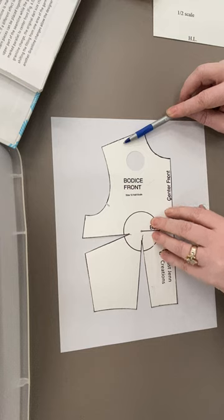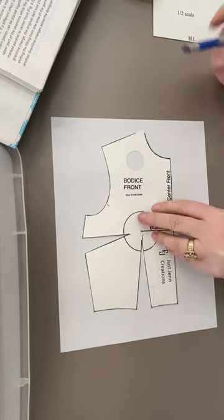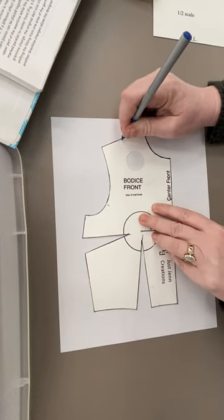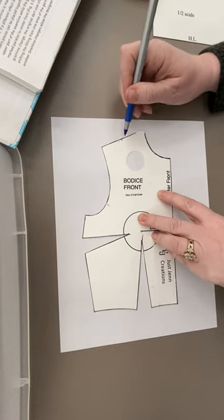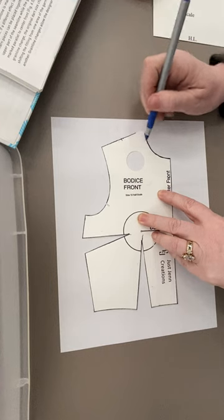In order to do that, I'm going to make a mark halfway in the shoulder on my sloper, not on my paper. I'm going to trace the shoulder down, the neck down, the center front all the way to the fold line of this bottom dart.